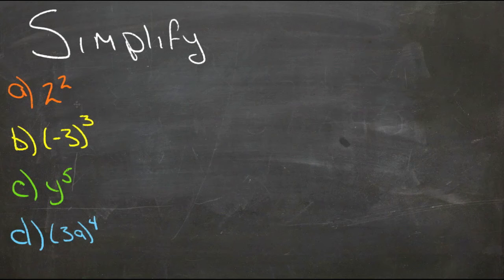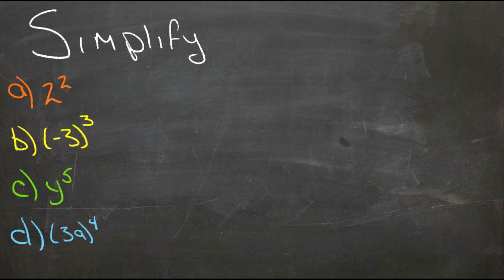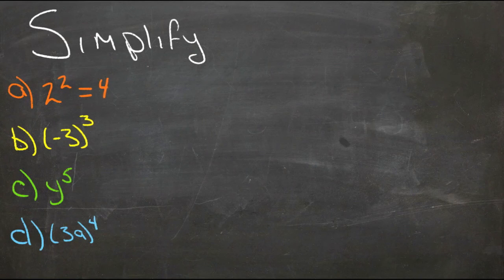When we have whole number values, like 2 to the second power — 2 times itself twice — we can actually simplify that to 4, because 2 times itself is 4.